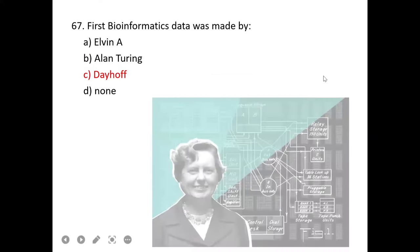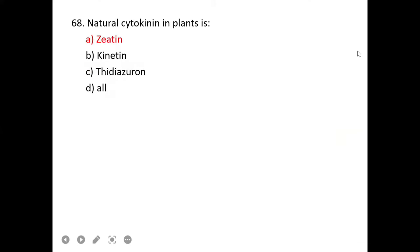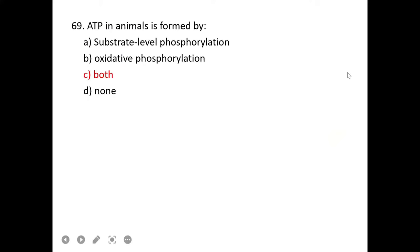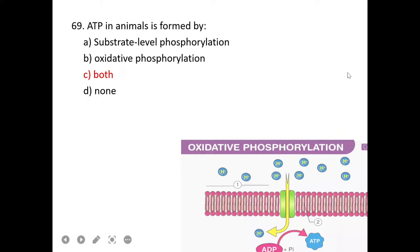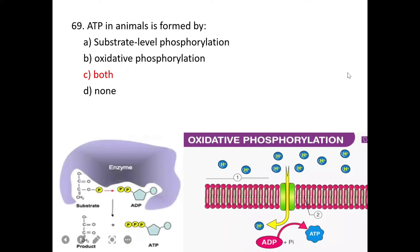Site of protein synthesis in cell is ribosomes. First bioinformatics data was made by Dayhoff. Natural cytokinin in plants is zeatin. ATP in animals is formed by substrate level phosphorylation and oxidative phosphorylation. C is correct.